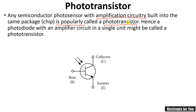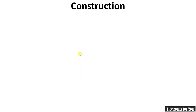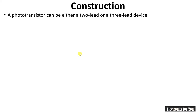This is the symbol for a photo transistor. It is similar to that of a bipolar junction transistor, having three terminals: collector, base, and emitter. The falling light is indicated here, showing that it is a photo-sensitive device.